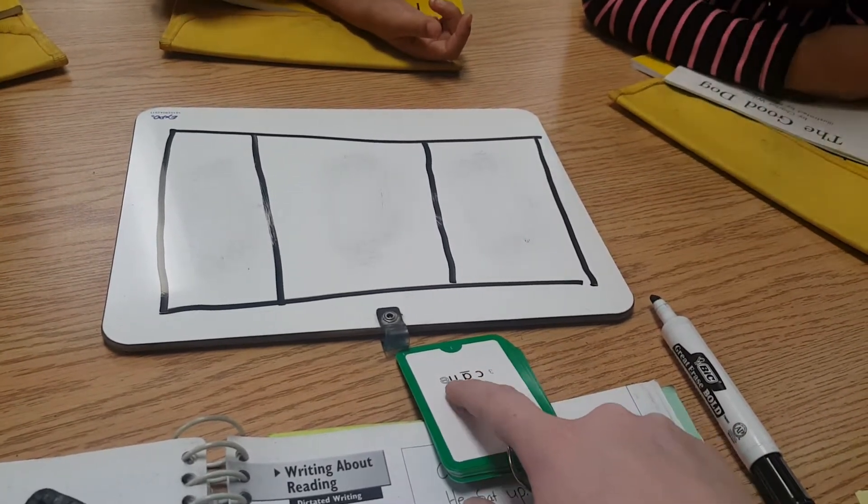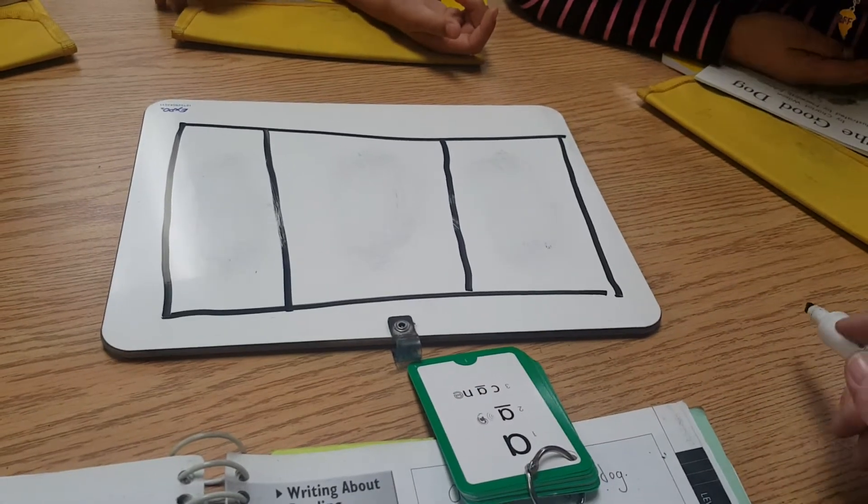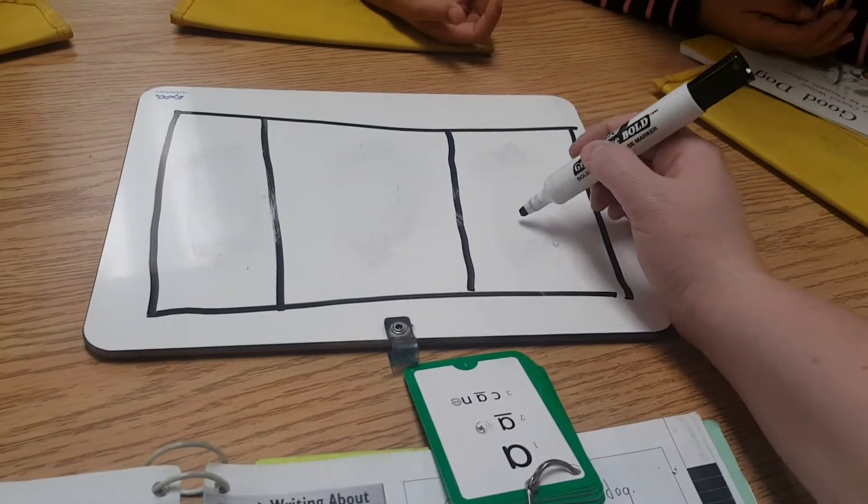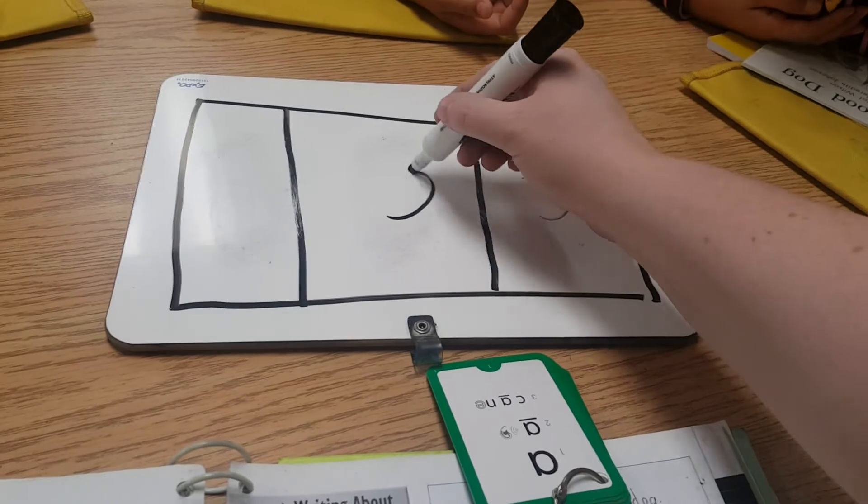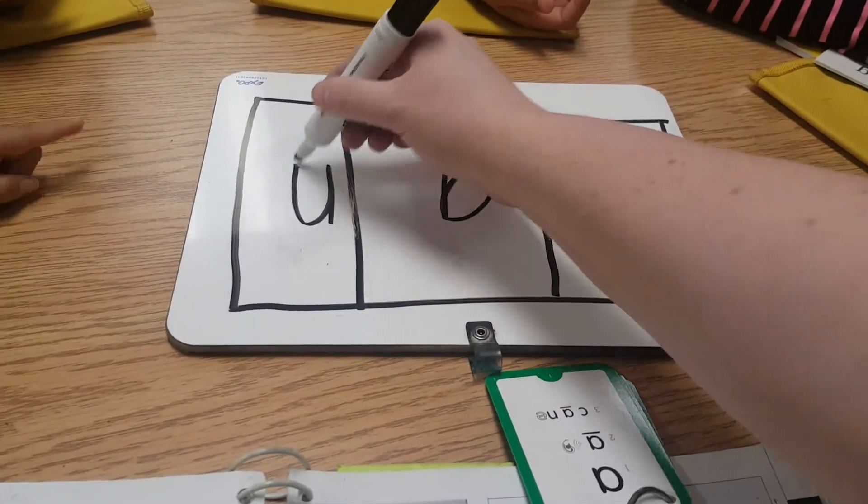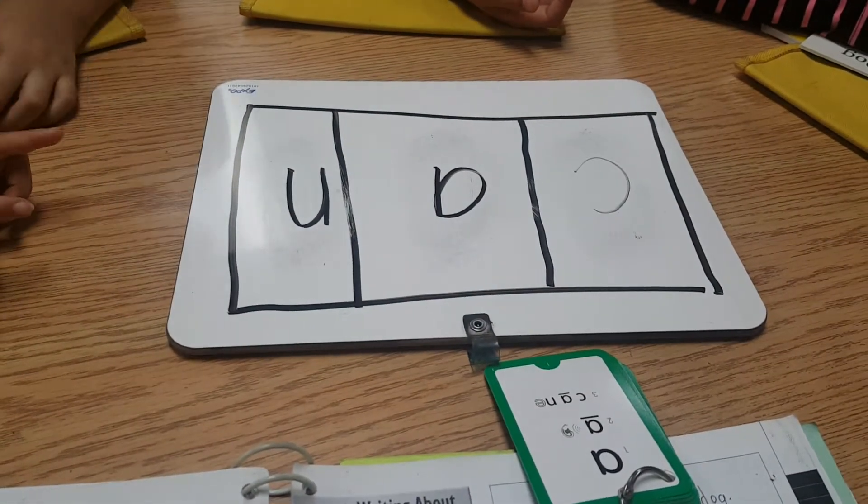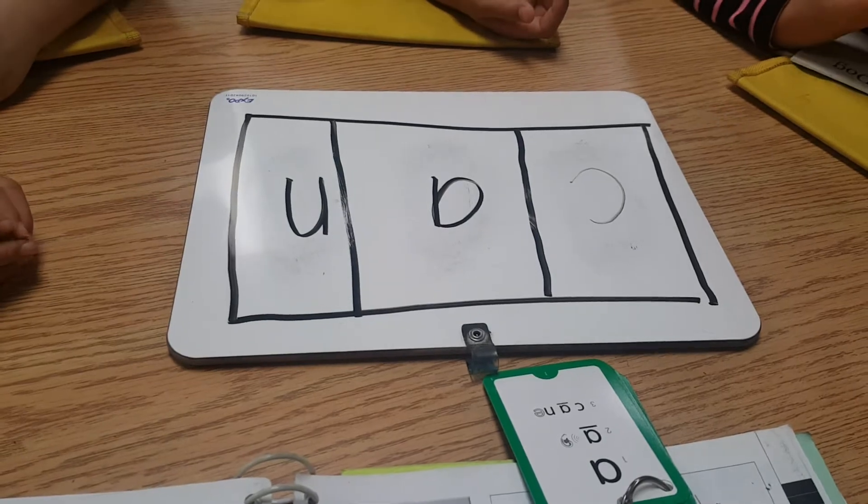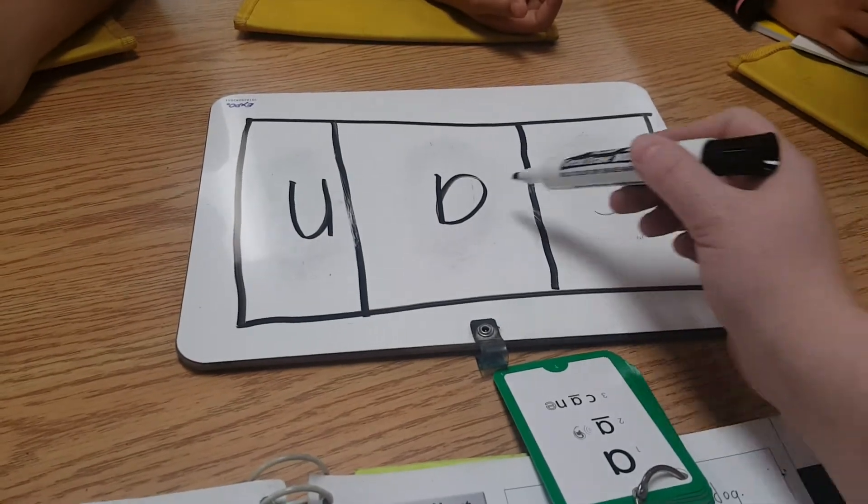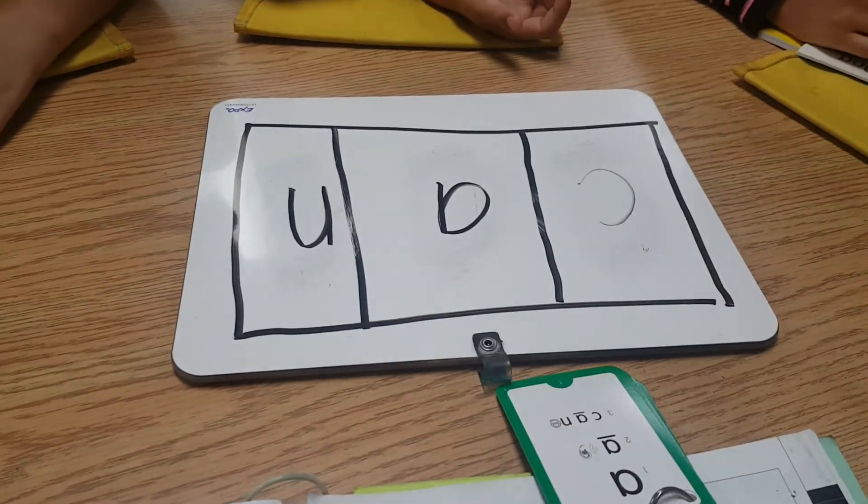Say the sounds of the word. C-A-N. Now, I'm going to write it in my boxes. Ready? C-A-N. Did I write all the sounds? No. I wrote all the sounds. I wrote C-A-N, but I didn't spell it correctly.